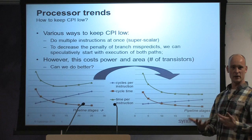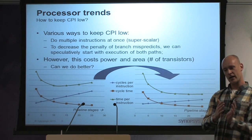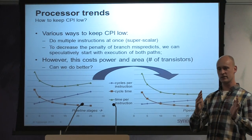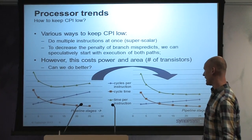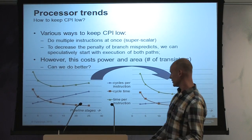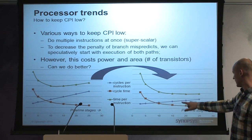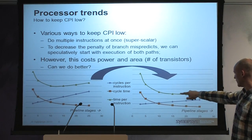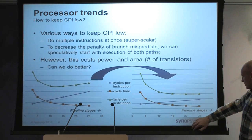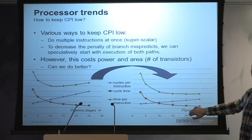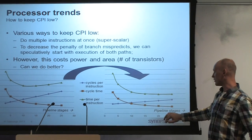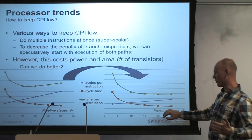We want to prevent these pipeline stalls where the CPU is doing nothing, thereby decreasing cycles per instruction. That moves the sweet spot of time per instruction further right, allowing more pipeline stages and lower time per cycle — a higher CPU frequency without sacrificing performance.